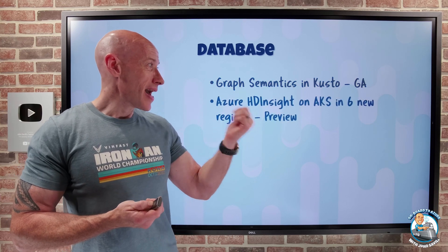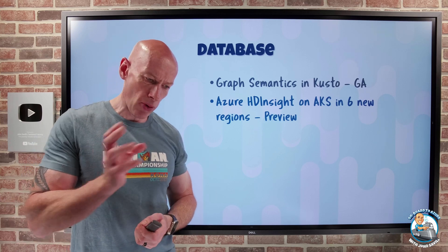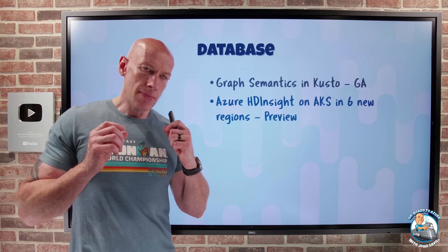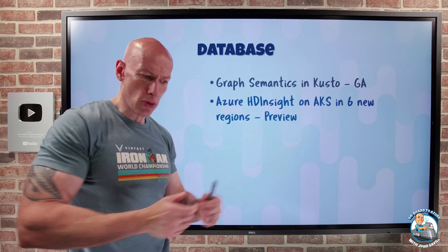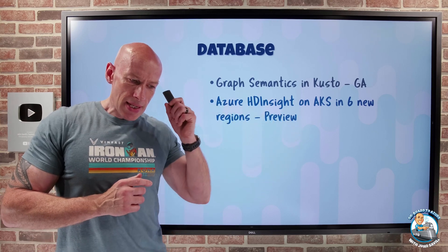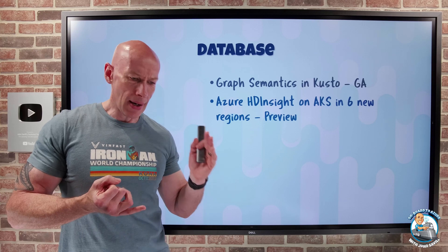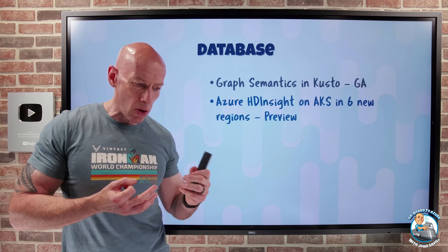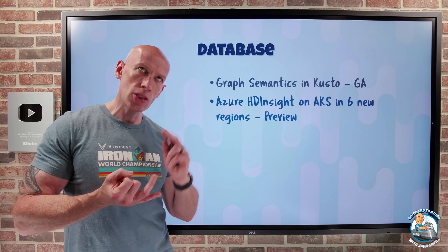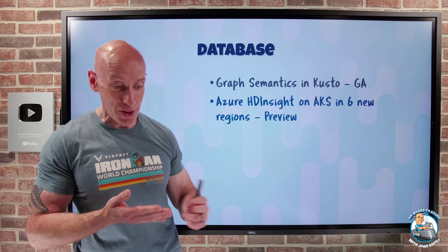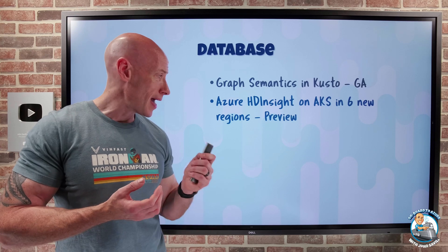Azure HDInsight on AKS is now available in six new regions. This is the modern way to get Apache Spark, Apache Flink, and Trino without managing the containers yourself. The new regions are Norway East, Switzerland North, France Central, Central US, Southeast Asia, and South Central US.